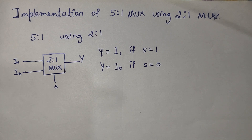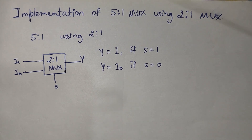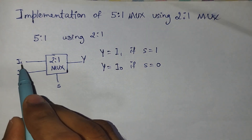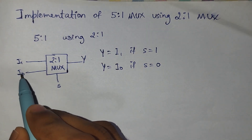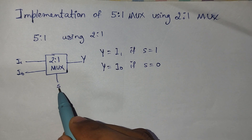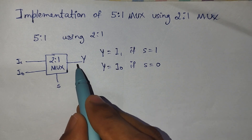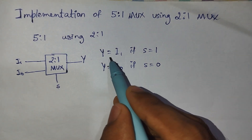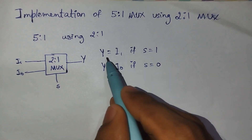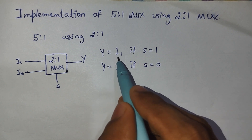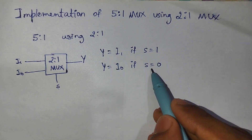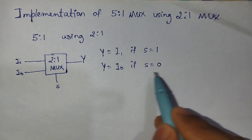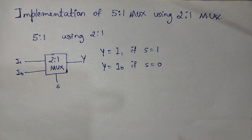In a 2-to-1 mux, we have two inputs: i1 and i0. Based on the value of the select lines, we get the output y. If s is equal to 1, then y is equal to i1. If the select line value is 0, then y is equal to i0.